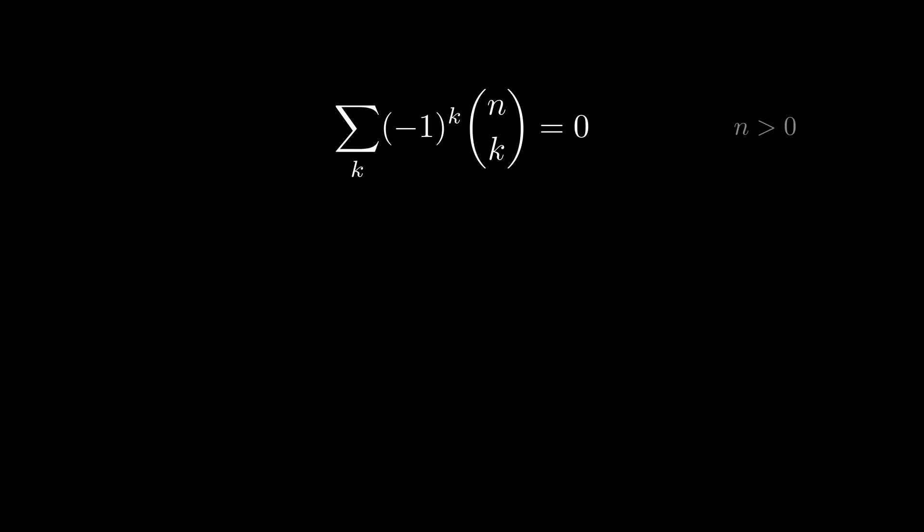I've seen this method used in many places, but theirs is such a pleasant treatment. By the way, if you're unfamiliar with this notation, which I pronounce as n choose k, learn about binomial coefficients elsewhere first. Perhaps you've seen this identity before. The alternating sum of binomial coefficients for a fixed n is zero when n is greater than zero.